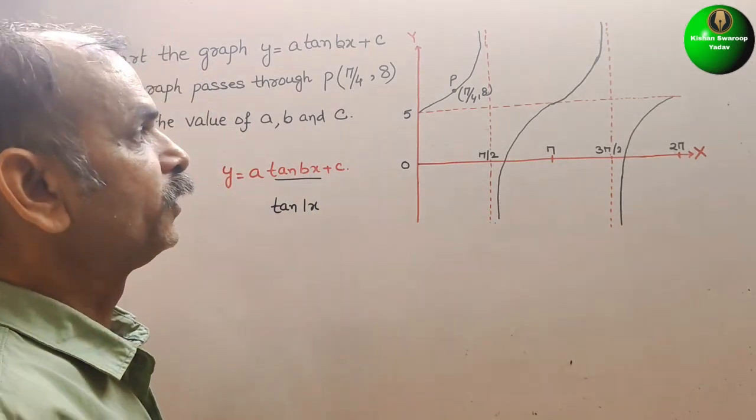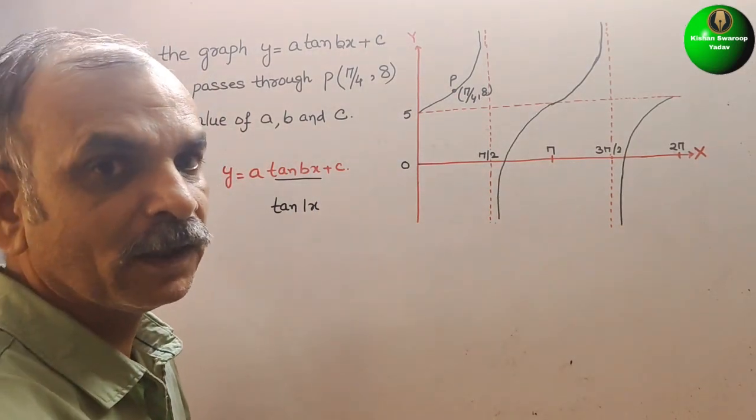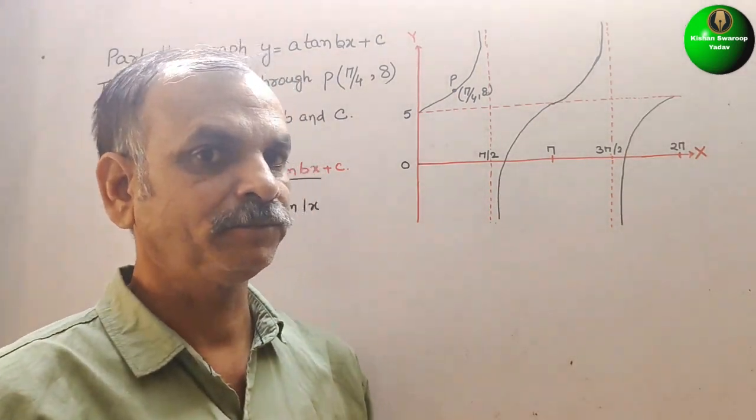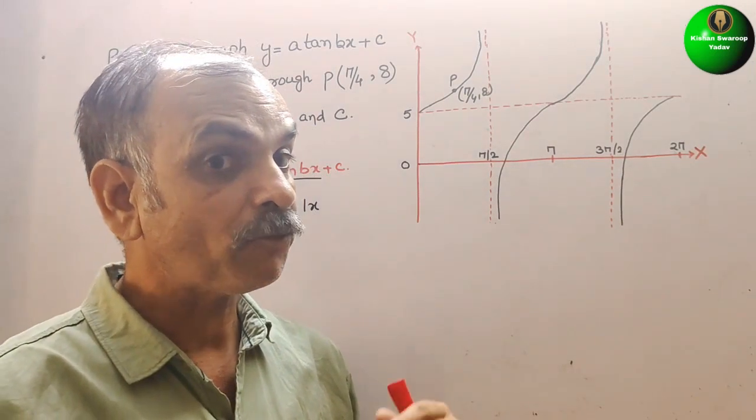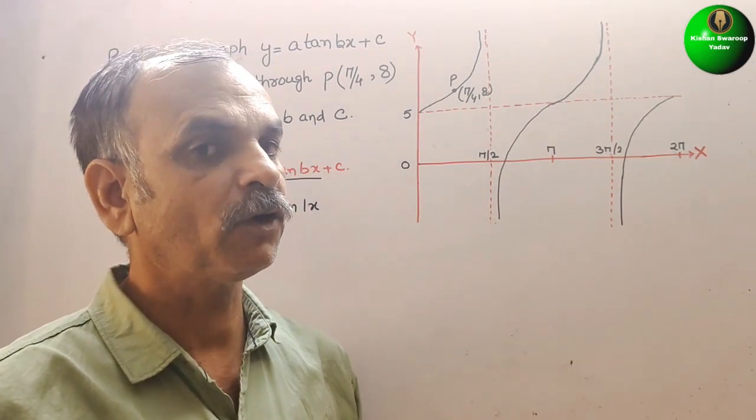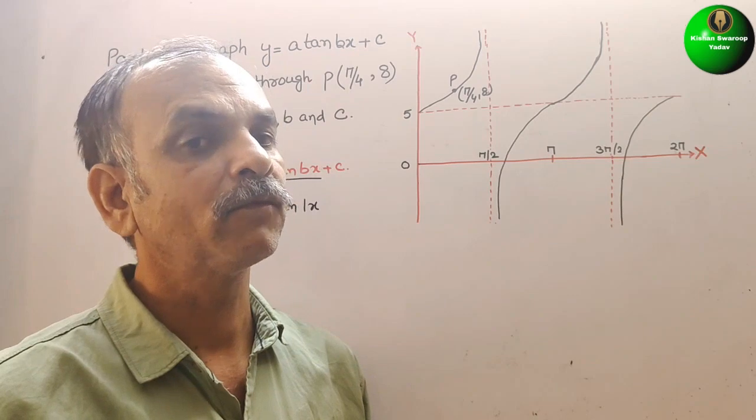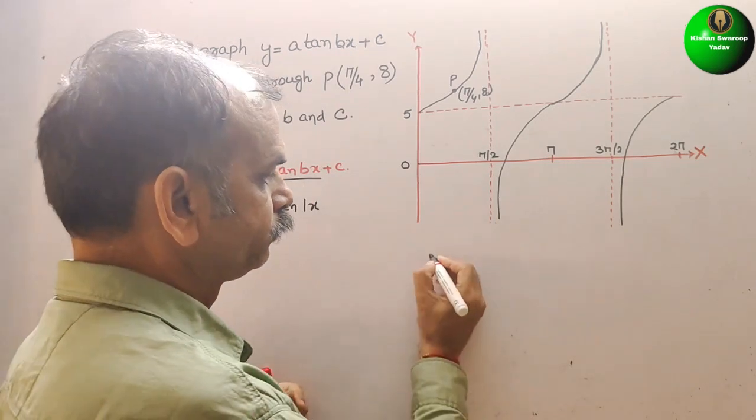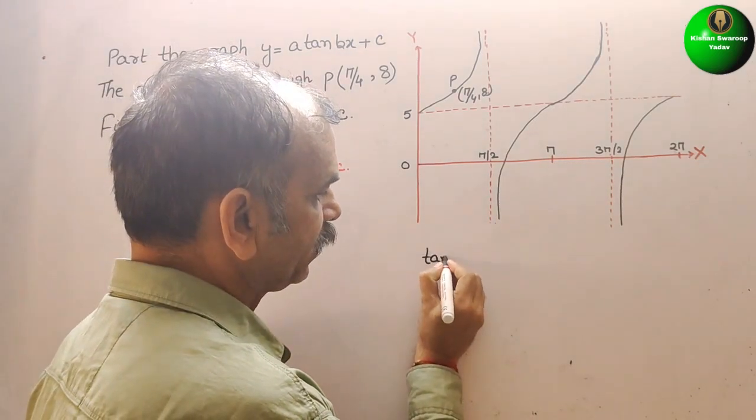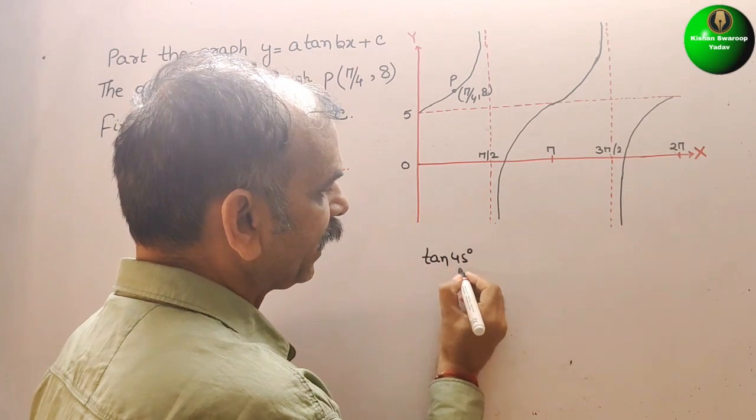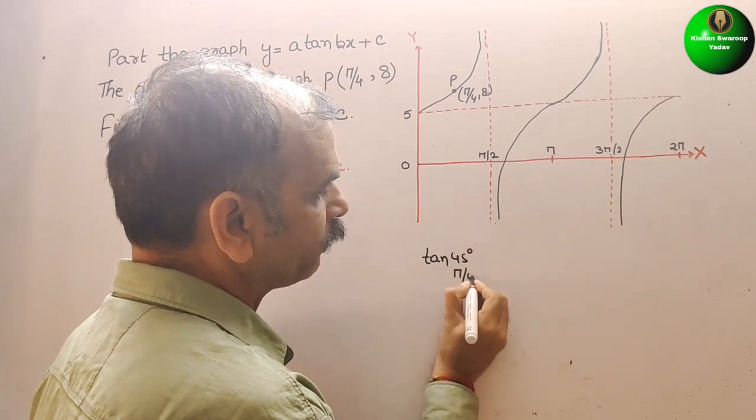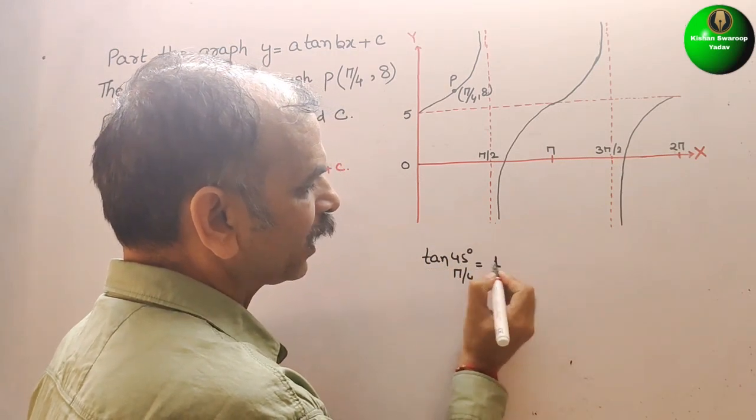Now, see this. Next comes what? Tan 45. Tan 45 is pi by 4. That means tan 45 is pi by 4. That is equal to 1.